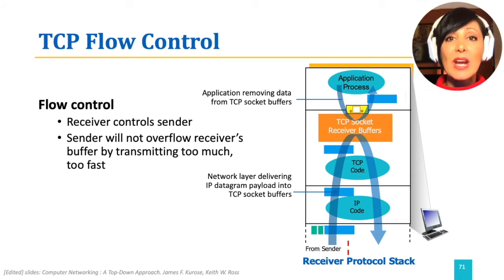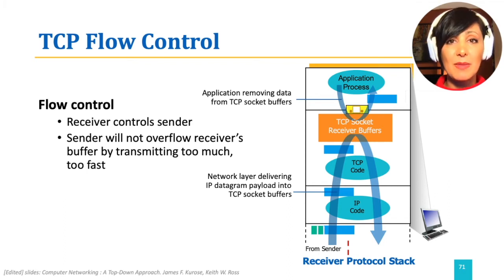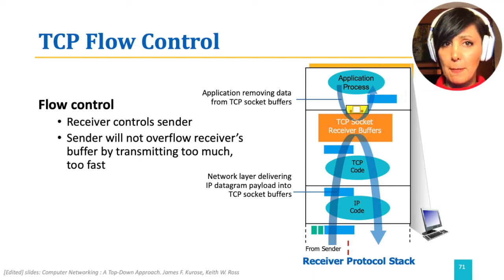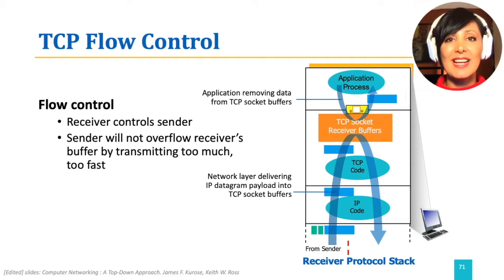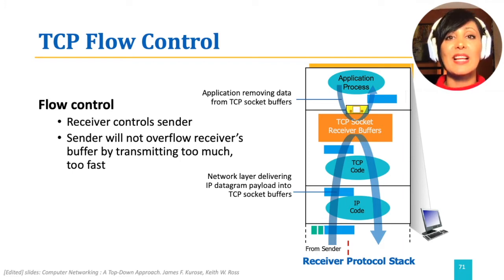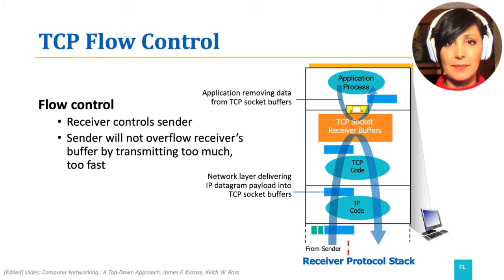If the sender's rate of sending is faster than the rate of the receiving application reading from the buffer, the receiver buffer may overflow. In order to control the rate of transmission so that the sender does not overwhelm the receiver, the receiver should be able to tell the sender its capacity for receiving data from the lower layer, to control the flow of data so it can manage the receiver buffer at its site. That is the service provided by TCP flow control.